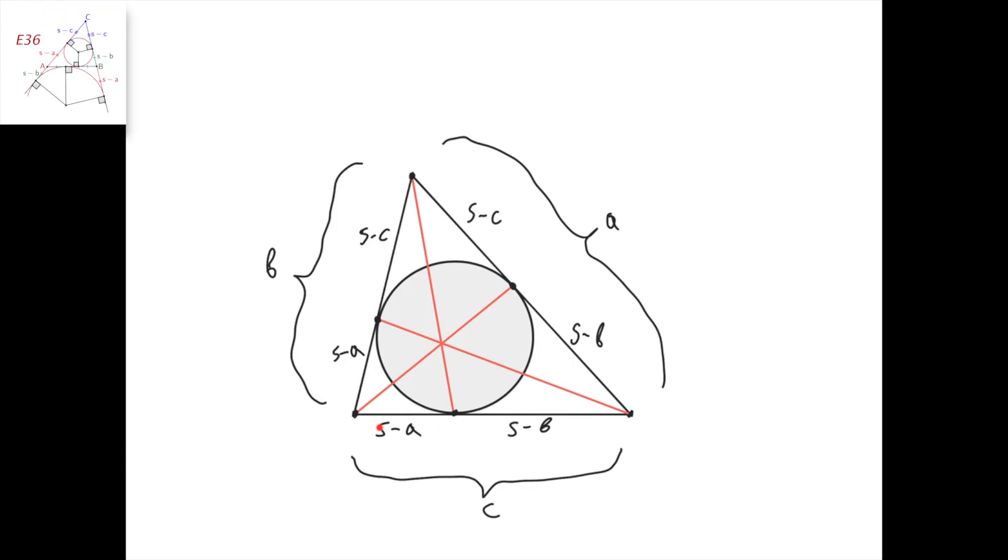Then, this segment here would be semi-perimeter minus A, this segment semi-perimeter minus B, this one semi-perimeter minus B again, this one semi-perimeter minus C, semi-perimeter minus C, and semi-perimeter minus A, where the semi-perimeter S is, of course, A plus B plus C divided by 2.